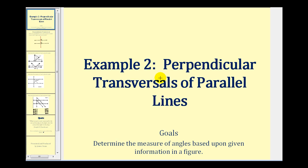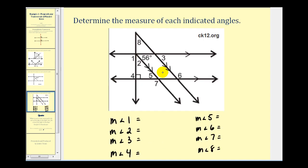Welcome to a second example of using the properties of perpendicular transversals of parallel lines to determine the measure of angles. Here's our diagram and we want to determine the measure of angles one through eight.